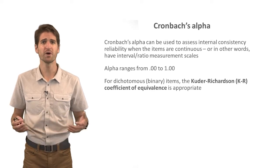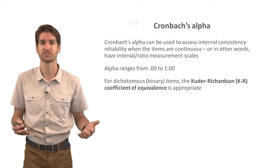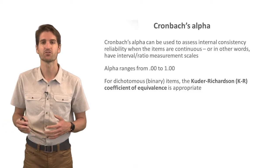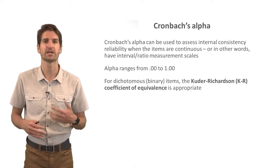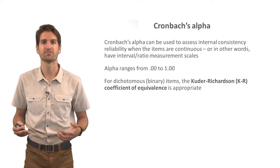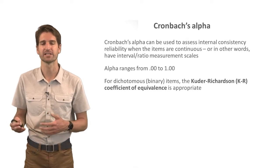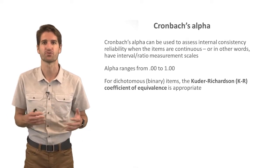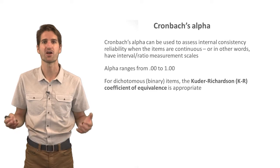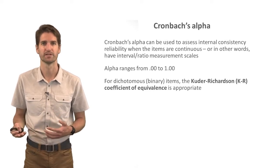Cronbach's Alpha can be used to assess internal consistency reliability when the items are continuous — in other words, when they have an interval or ratio measurement scale. If the items are dichotomous or binary, such as yes/no or true/false, then the Kuder-Richardson or KR coefficient of equivalence is going to be more appropriate.